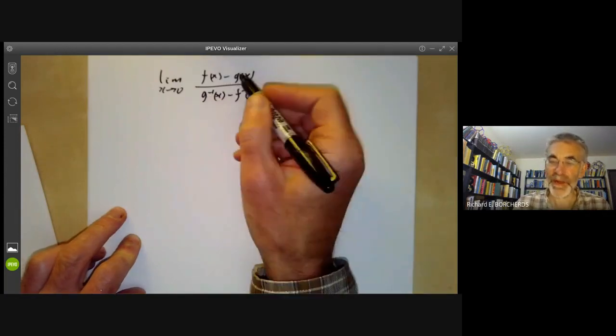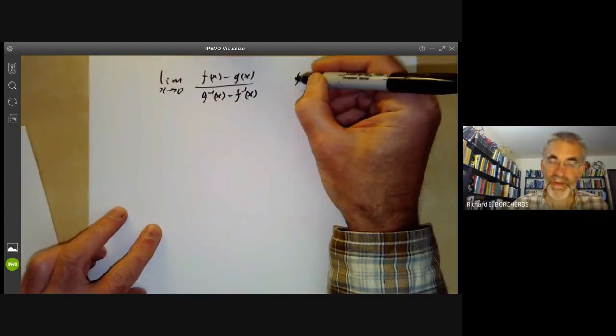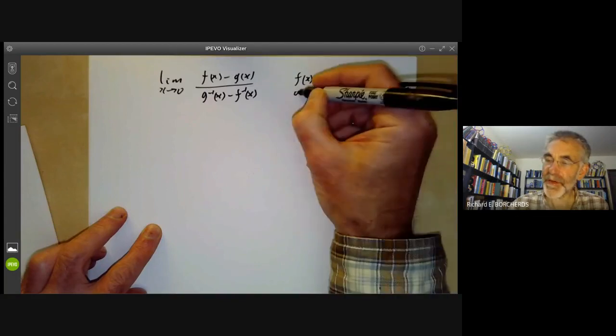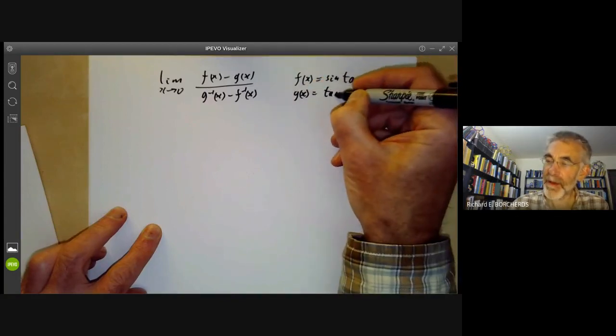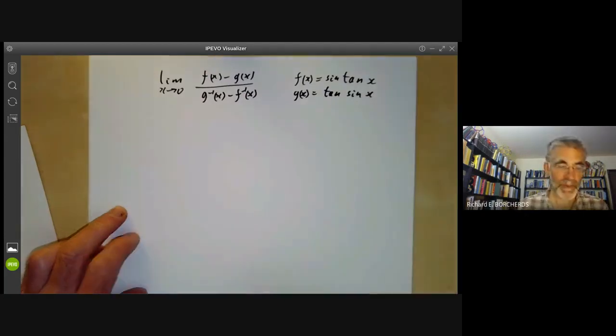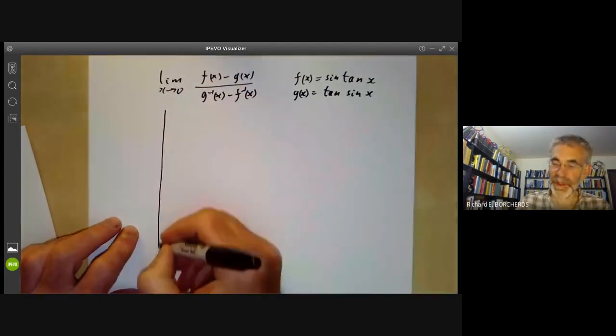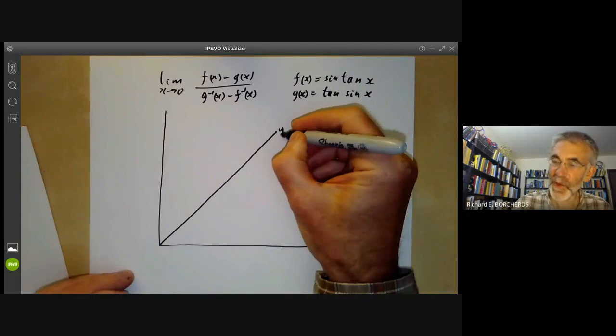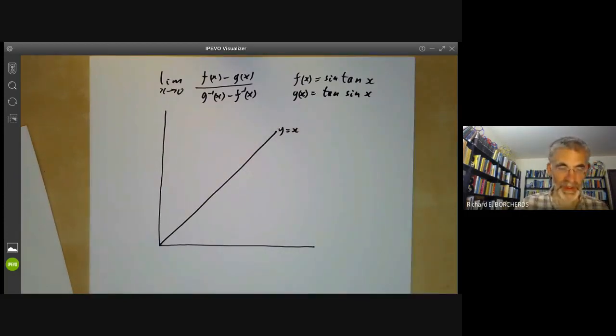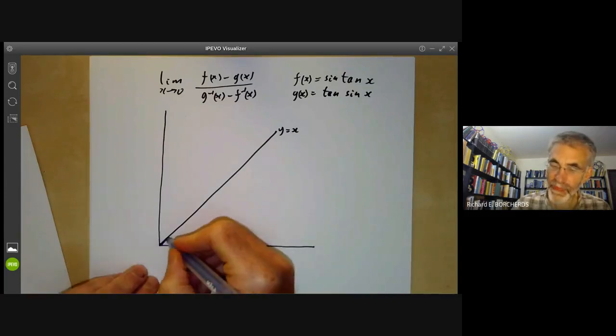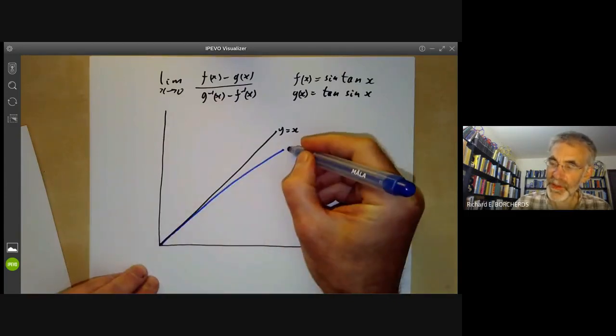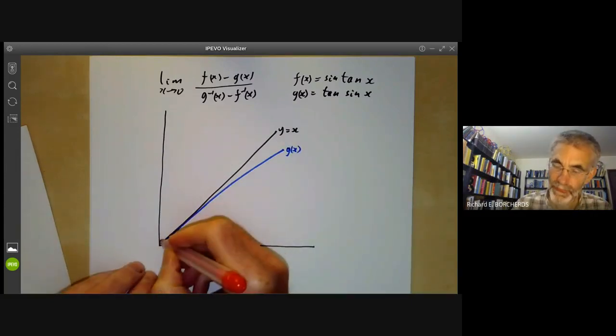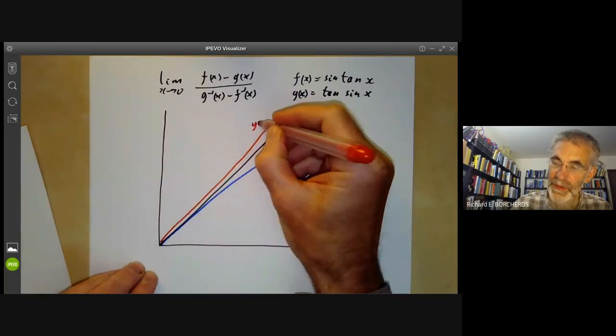So what we do is we just draw a picture of what is going on, because drawing a picture is always a really good way to understand what's going on. This is going to be the line y equals x, and I'm going to draw a blue line for the graph of g(x) and a red line for the graph of y equals f(x).